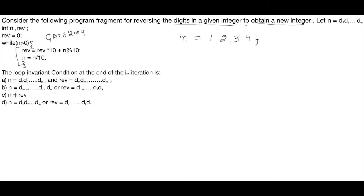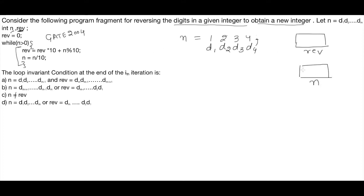if n is equal to 1234, then digit 1 is 1, digit 2 is 2, digit 3 is 3, and digit 4 is 4. They have taken one more variable called REV, which is going to store the reverse of the number. n is the given number. Initially REV is 0. The condition is: while n is greater than 0.